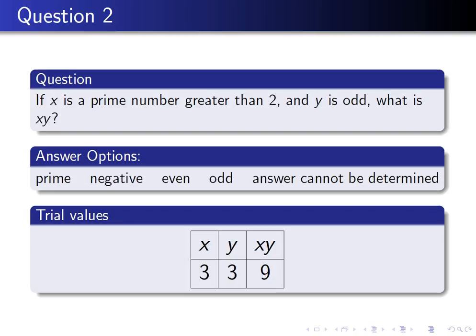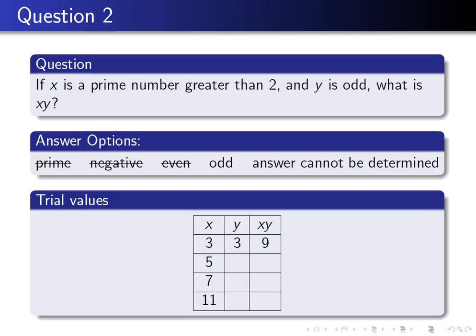Let's try first the smallest prime number greater than 2, which is 3, and let's try Y equals 3, which is odd, and then X times Y is 9. We can straight away cross off several of the answer options because for these values, for these legal and acceptable values, X times Y is not prime, is not negative, and is not even.